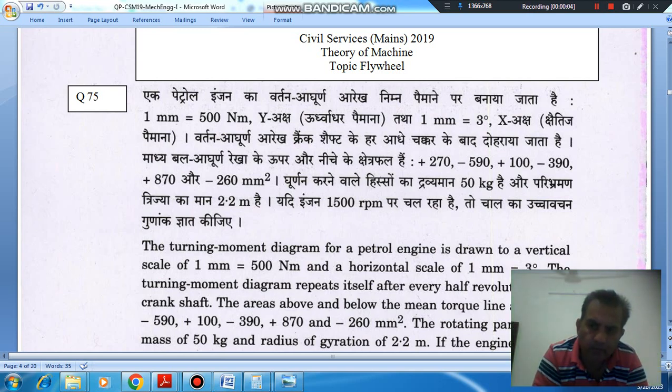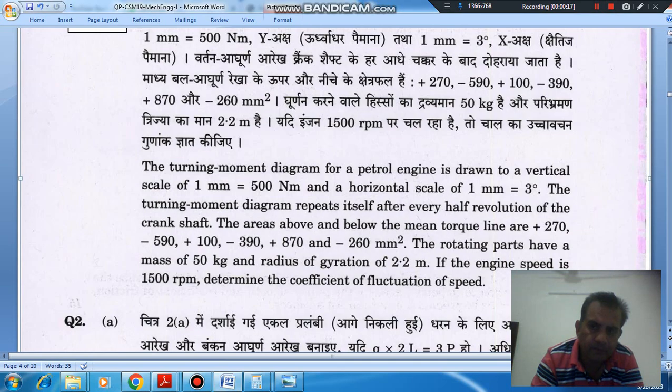Hello, welcome again. We are solving some conventional questions of theory of machines. The topic is flywheel, question number 75 from Civil Services May 2019. The turning moment diagram for a petrol engine is drawn to a vertical scale of 1 mm equals 500 Nm and a horizontal scale of 1 mm equals 3 degrees. The turning moment diagram repeats itself after every half revolution of the crankshaft.